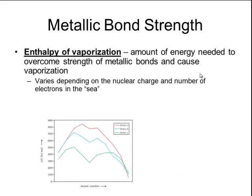Just like we can analyze the bond strength of covalent bonds and ionic bonds, we can also analyze the bond strength of metallic bonds. We can estimate the bond strength of a metallic bond by looking at its enthalpy of vaporization — the amount of energy needed to overcome the strength of the metallic bonds and cause vaporization. The enthalpy of vaporization is really the amount of energy needed to cause a liquid metal to boil.